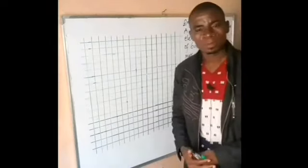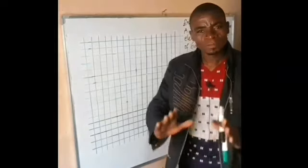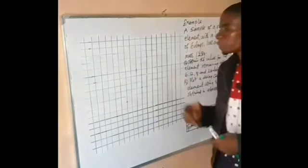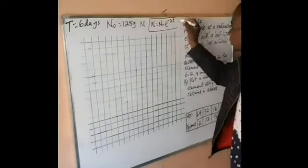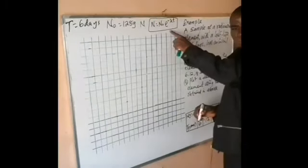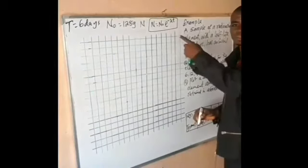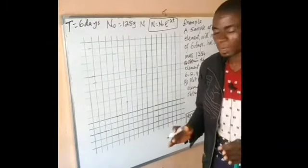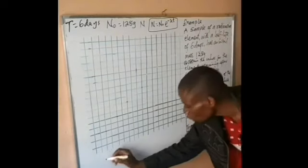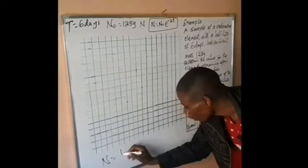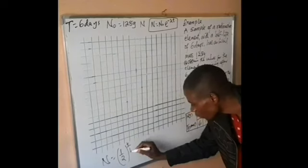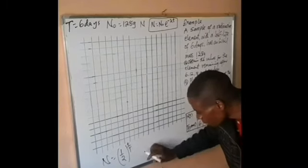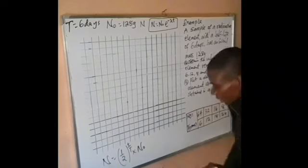This is the table we will obtain. The question is: how do we actually obtain the table? We could use the relationship N = N₀ × e^(−λT), but that would take longer. Instead, let us use the easier formula: N = (1/2)^(T / T_half) × N₀.